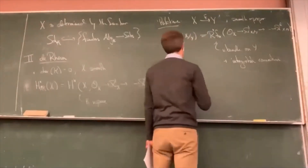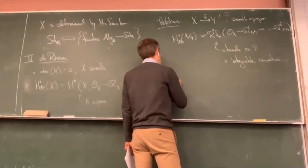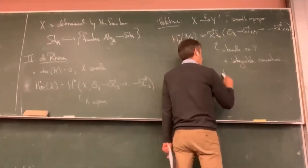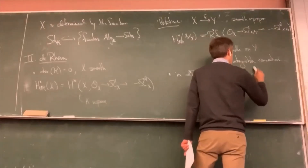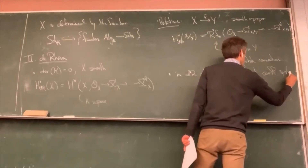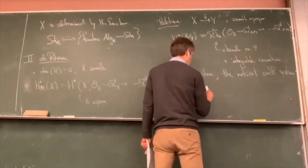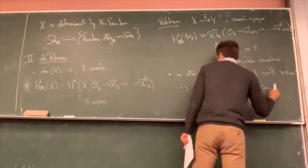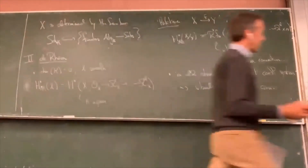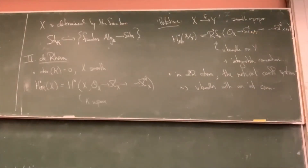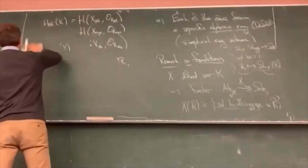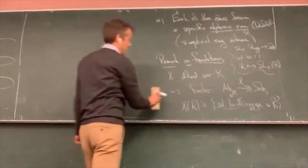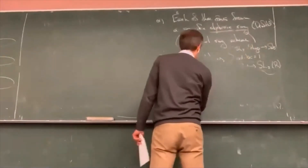Now what is an integrable connection? Intuitively, it's some data on your vector bundle that allows you to identify any two infinitesimally near fibers of the vector bundle. For instance, if you're looking at solutions to a differential equation, you can extend them. But now we want to interpret that geometrically. An integrable connection is data identifying infinitesimally near fibers.